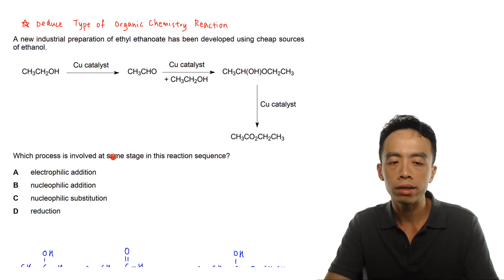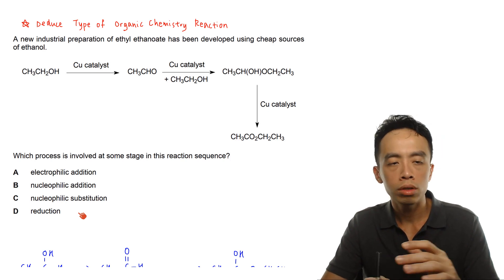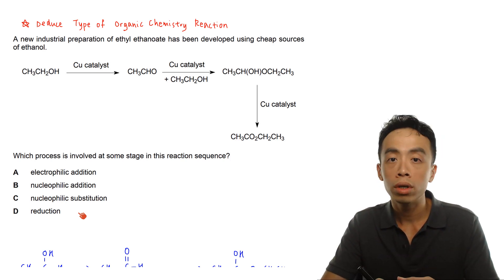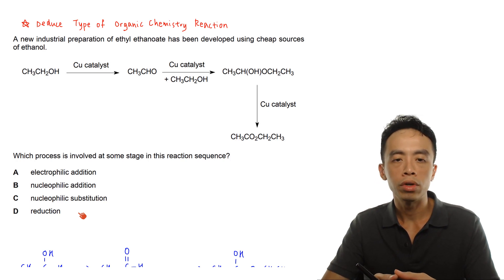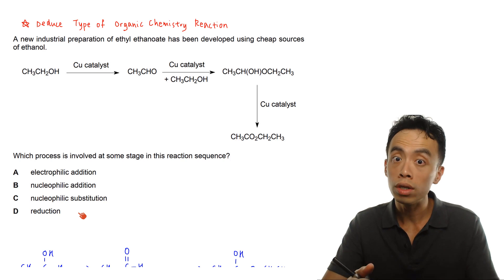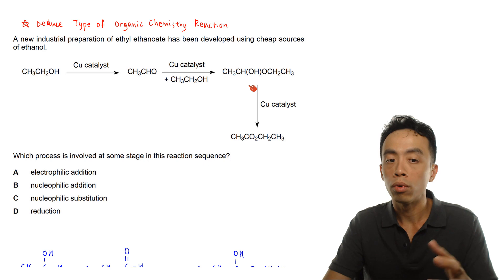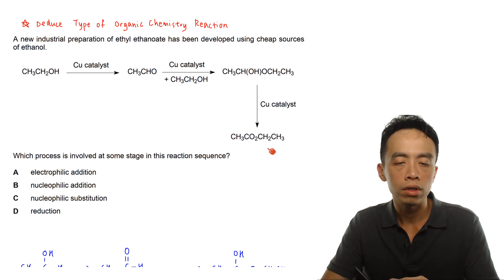So the question asks which process is involved at some stage in this reaction sequence? Option A will be electrophilic addition reaction, option B is nucleophilic addition, option C is nucleophilic substitution and finally option D would be reduction. So essentially what we need to do is pretty simple. We just need to compare the molecular formula and we can determine what is the type of reaction taking place at each of this stage. So all these reactions are new, it is not in the syllabus, so it is a matter of deduction.